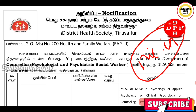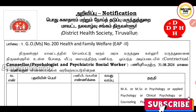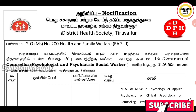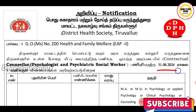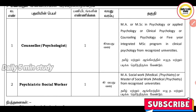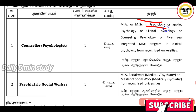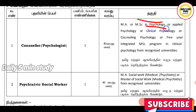You can check the notification in your mobile Chrome browser. For the counselor and psychologist post, you will be able to apply with M.A. or M.S.E. in psychology, applied psychology, clinical psychology, counseling psychology, or a 5-year integrated M.S.E. program. You can apply in Tamil and English as well.